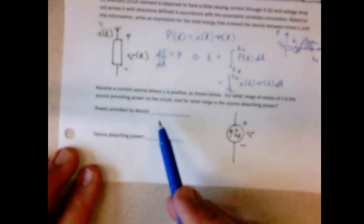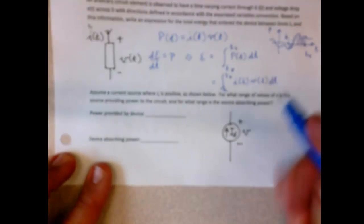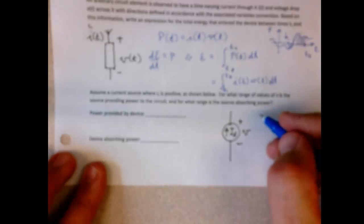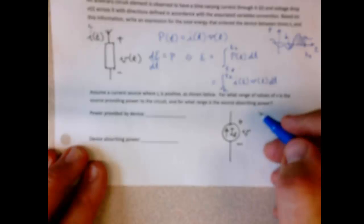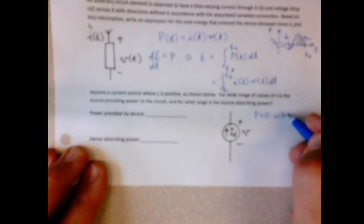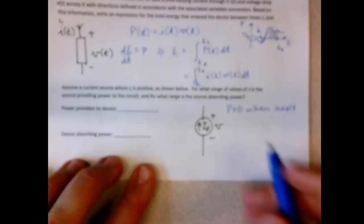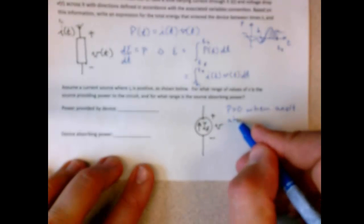So then the final question says, if you look at a current source where the current is positive, I'm sorry, where the current source has positive strength, what range of values is the V providing current? So we know that we're providing power. So generally we know that power is greater than zero when an element is absorbing power.